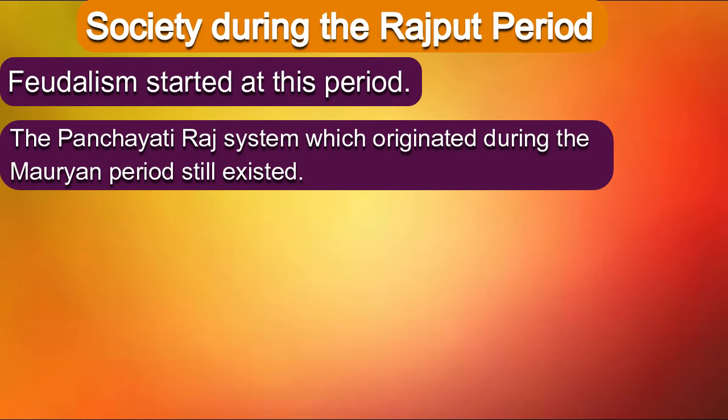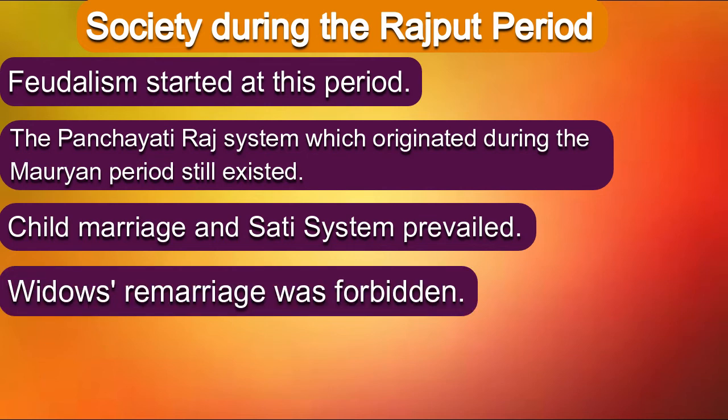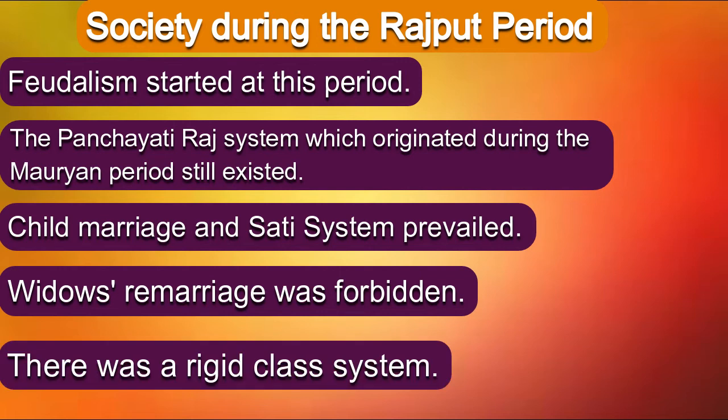The warriors and ruling class were chief in the society. Child marriages and the sati system were prevailing at this time. Widow remarriage was forbidden. There was a rigid class system, meaning the caste system was strictly followed.